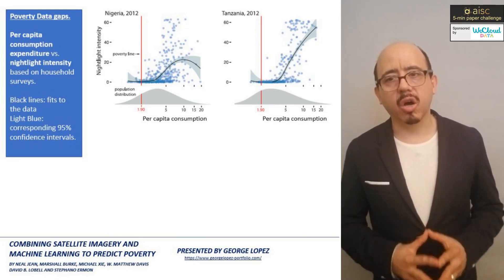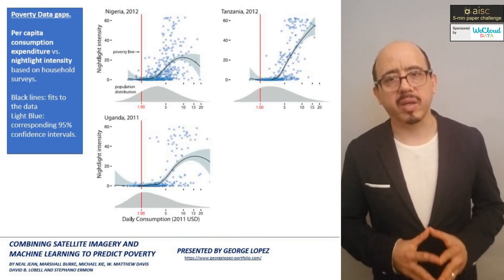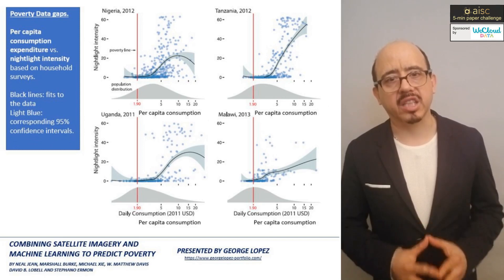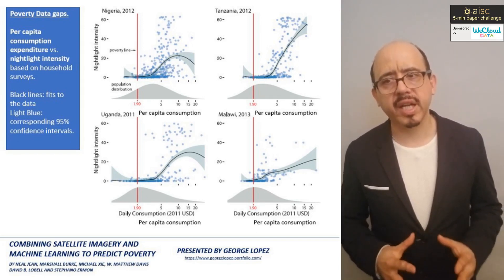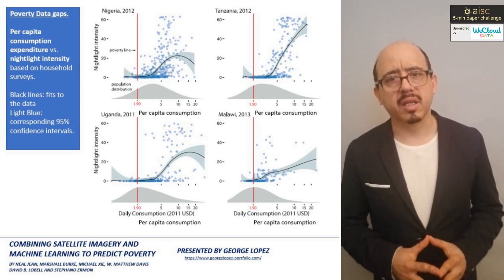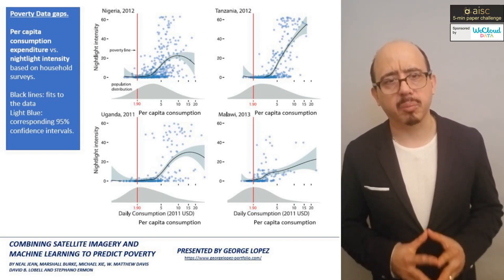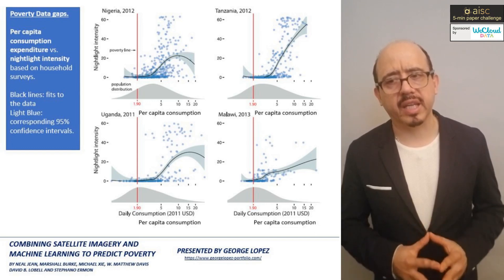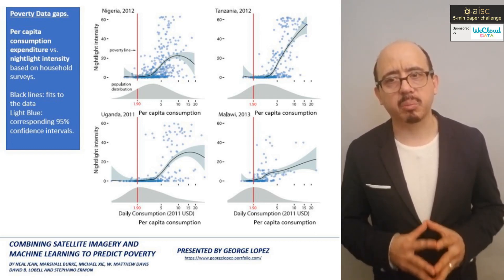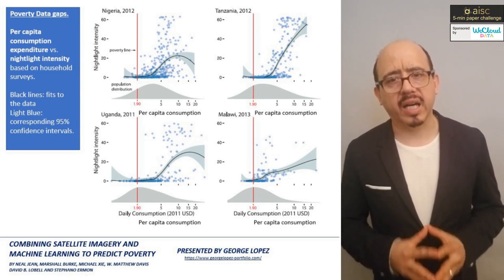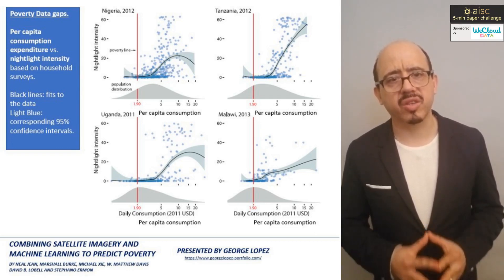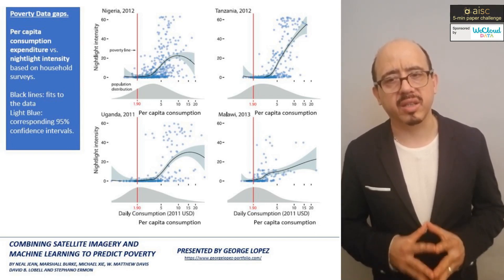Commonly, governments depend on surveys to gather economic measurements and take actions, but applying these surveys is not simple and they are very costly. Here is where the method proposed by the authors comes in. They propose a machine learning approach based on the technique of transfer learning that promises to resolve this drawback and offers greater prediction accuracy than solely considering luminosity intensity.